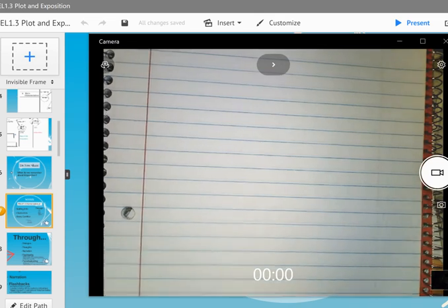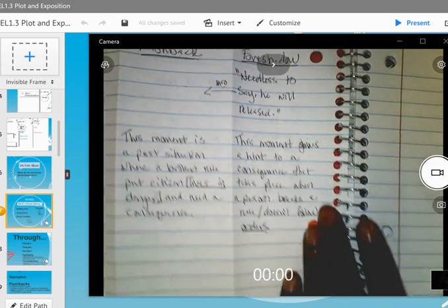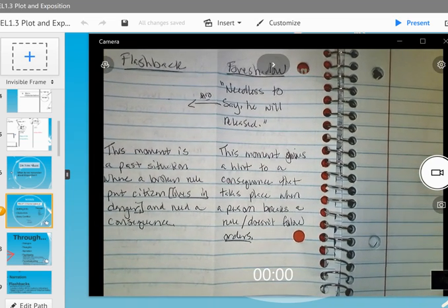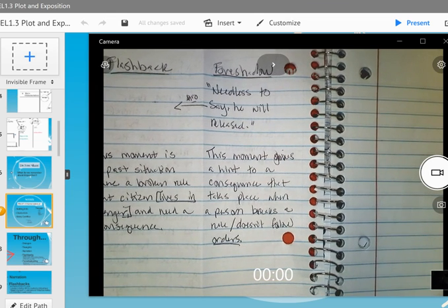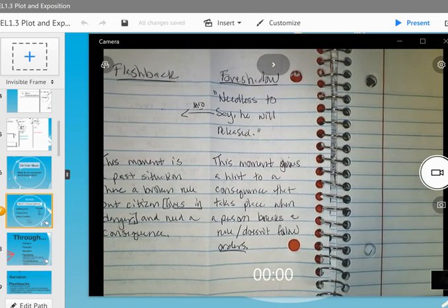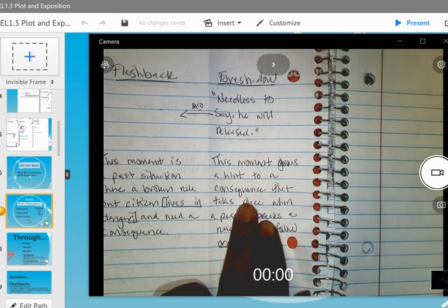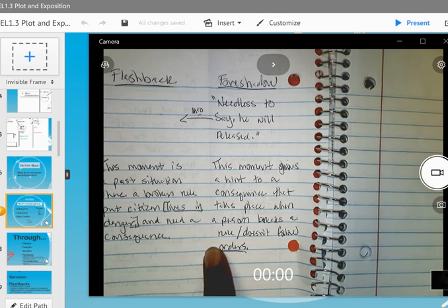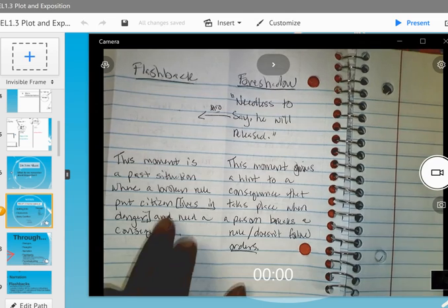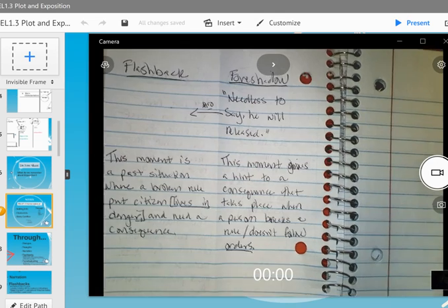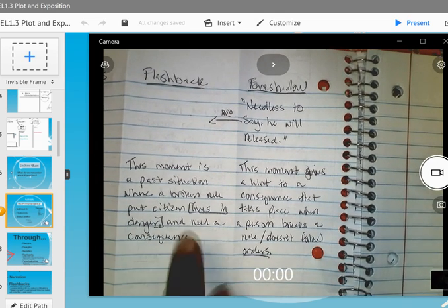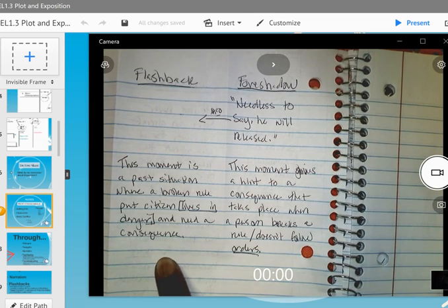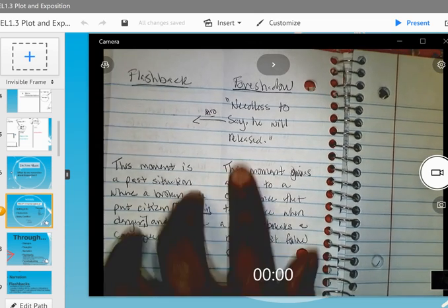The second moment I had was a flashback, but some classes saw it as a foreshadow. That's why you see me with an arrow saying it can be also. In this moment, in the same chapter, it says needless to say he will be released. This moment was when Jonas was telling the story about what happened a year ago when the plane flew over. The idea of saying release lets me know release is a consequence. It gave a hint to a consequence that happens when you break a rule or don't follow orders, so I'm connecting back to orders. Or in this case for flashback, same evidence, but I know this is a moment that happened in the past. The speaker said this a year ago to the plane, so it happened in the past where a broken rule put citizen lives in danger because Jonas was frightened, he was scared. This moment needed a consequence. I have two and a half because I used the same evidence for another one. That's all you need to do.